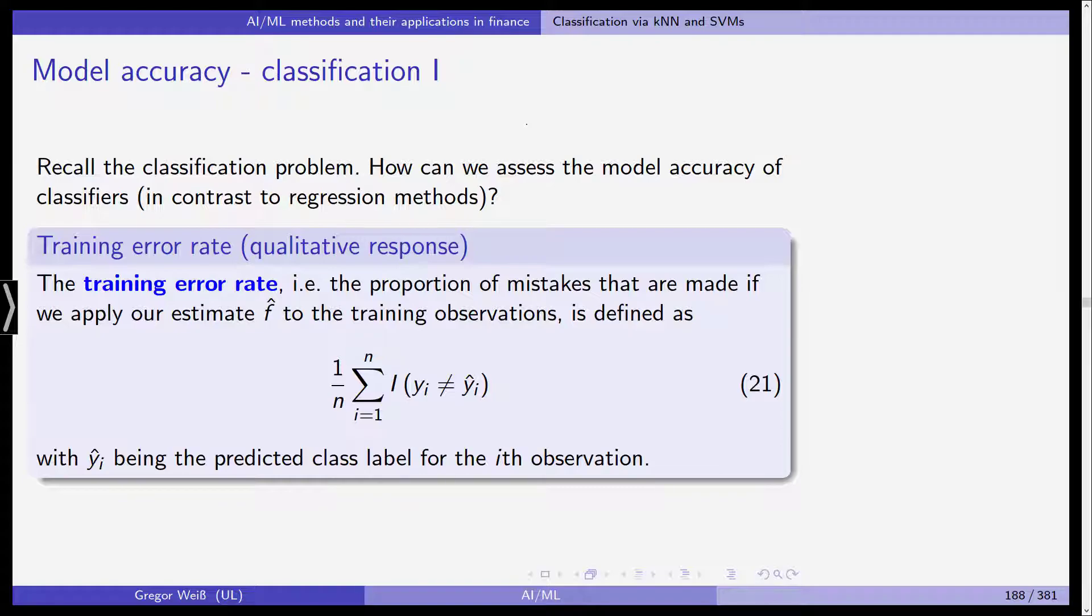The training error rate, with this we mean the proportion of mistakes that the algorithm has made if we apply our estimate F hat to the training observations. This is defined as basically the average of an indicator function, this I here in equation 21. This is an indicator function that looks at the comparison of the observations yi of our qualitative response. It is one if yi is not equal to our predicted value. So yi hat is the predicted class label for the ith observation, and we simply take the average across all these indicator functions. So basically, it's the proportion of mistakes that we make.